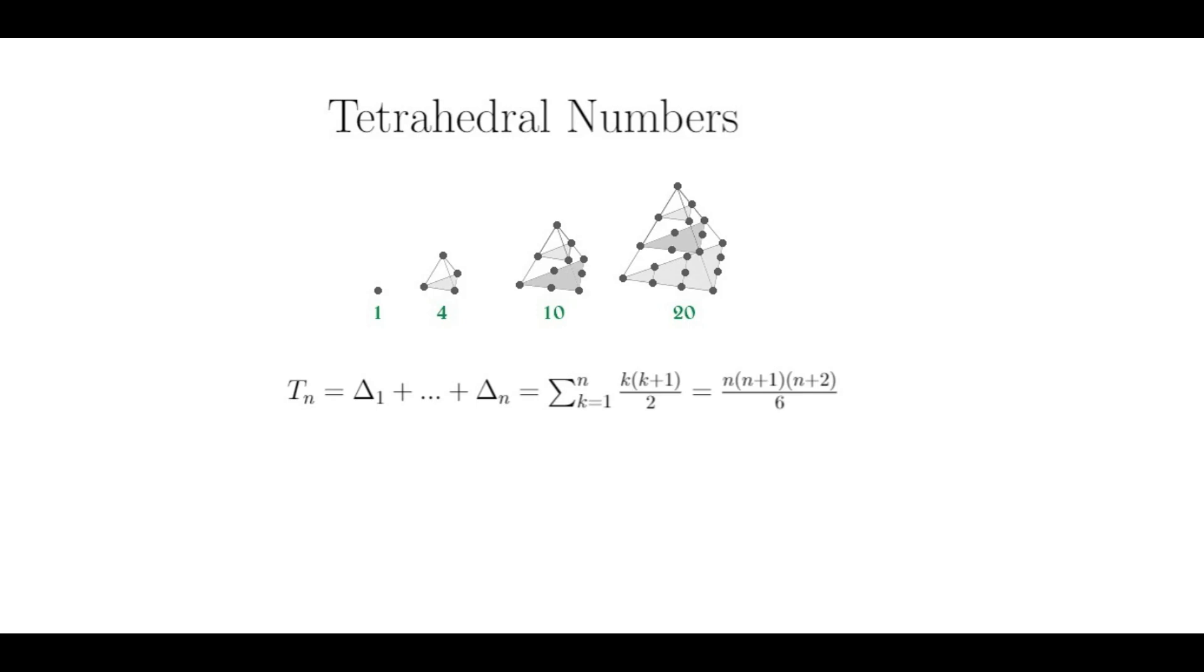That is because the shape of the tetrahedron has a triangle associated with the nth triangular number as its base, and all consecutive smaller triangular cross sections on top until you reach the highest point, which is 1, which is just delta sub 1, or the first triangular number.